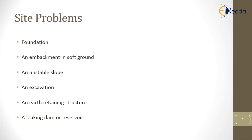The feasibility of a particular method is strongly related to the type of problem at hand — such as a foundation or an embankment on soft ground, an unstable slope, an excavation, an earth retaining structure, or a leaking dam or reservoir. These are the problems we usually come across during construction.